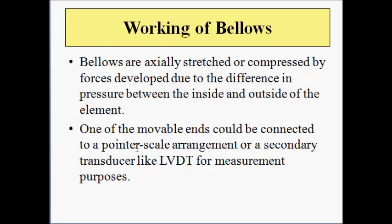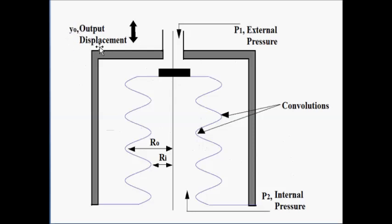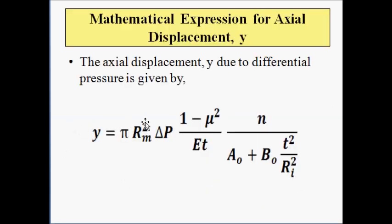The movable ends can either be connected to a pointer-scale arrangement or a secondary transducer like LVDT for measurement purposes. We are going to discuss both of them in the upcoming slides. Now the mathematical expression for the axial displacement — the displacement of the free end of the bellow due to differential pressure.